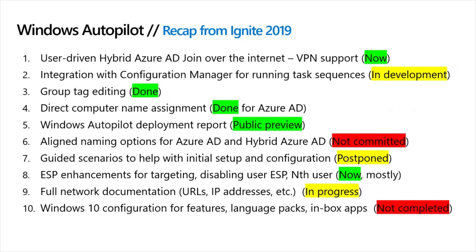The last item on the list — Windows 10 configuration for features, language packs, and inbox apps. We've not made a whole lot of progress providing built-in support for doing that via Intune, although I have published scripts and samples like the autopilot branding package that you can use to deploy that via Intune as a Win32 app to take care of those items. It's just not as smooth as we would like, so we have more work to do.